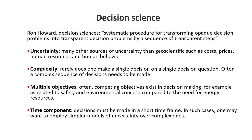Decision analysis is a science, and so we have to clarify some of that. Ron Howard said the decision is a science because it consists of a systematic procedure that transforms opaque decision problems into transparent decision problems by a sequence of transparent steps. Basically this means we're going to state a number of rules that are based on logic, mathematics, and probability, which allow us to follow these steps when making decisions.